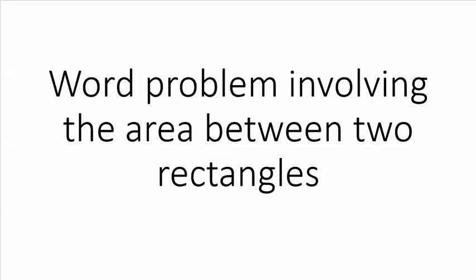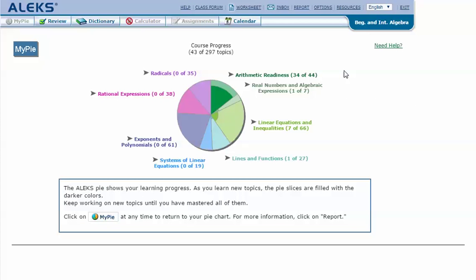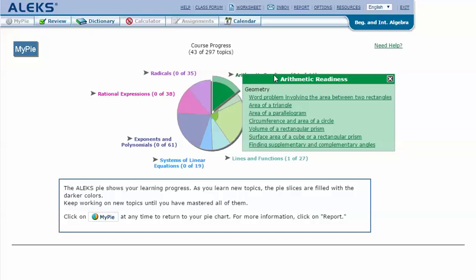Word problem involving the area between two rectangles. In your ALEKS screen, mouse over the green slice Arithmetic Readiness to reveal the drop-down list of topics you need to cover. Click on word problem involving the area between two rectangles.